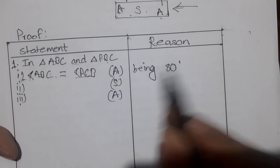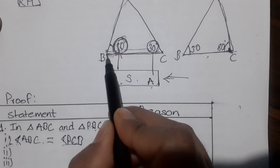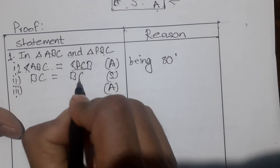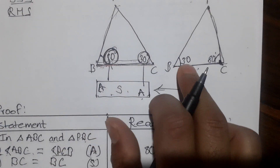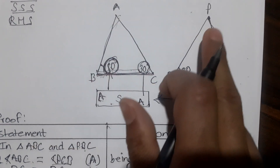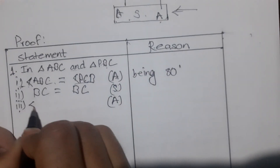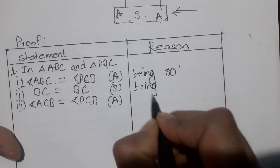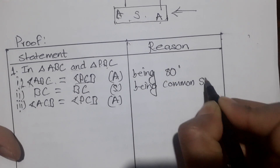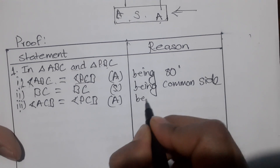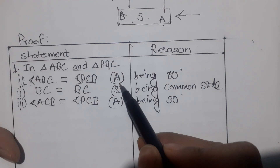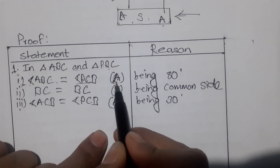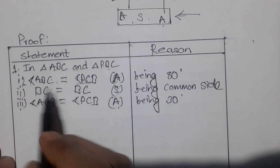We can see that BC is equal to BC, and finally 30 degrees is equal to angle ACB. Angle ACB is equal to angle PCB, so angle ACB is equal to angle PCB. BC is equal to BC, and ACB is equal to PCB — the corresponding parts match.